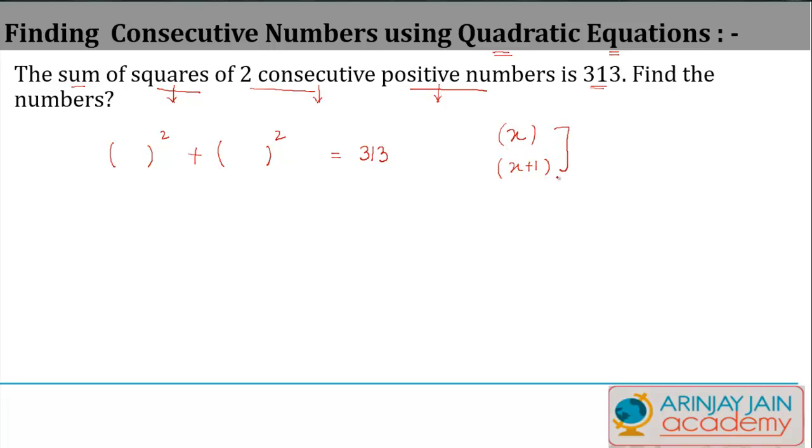You are told that the sum of the squares of these two numbers, which is x² and (x+1)² whole square, is equal to 313. Both these numbers are positive.